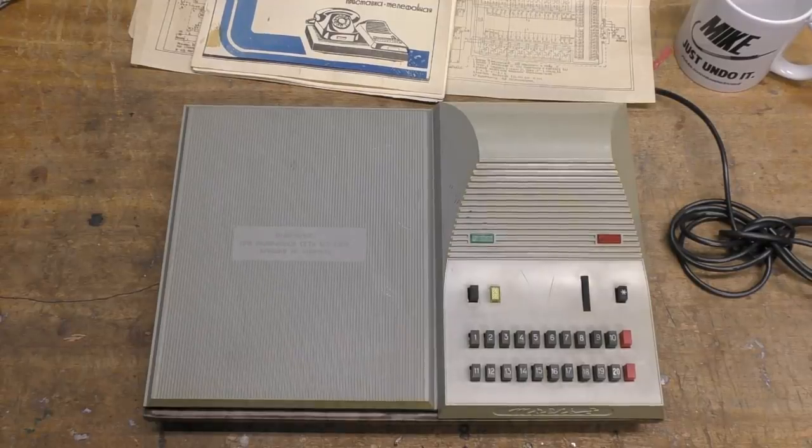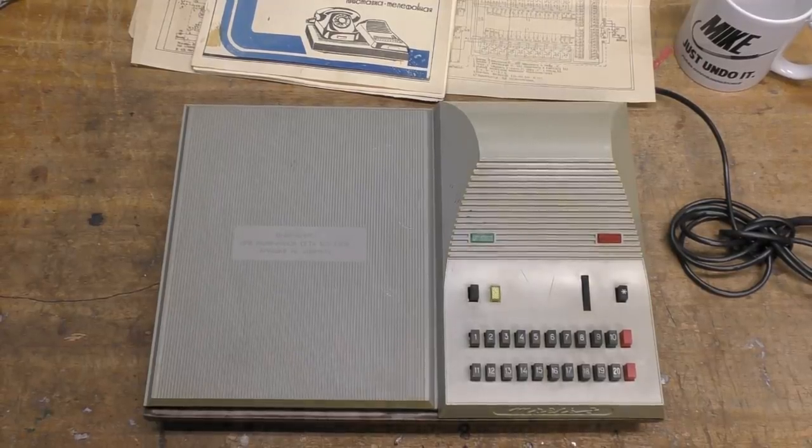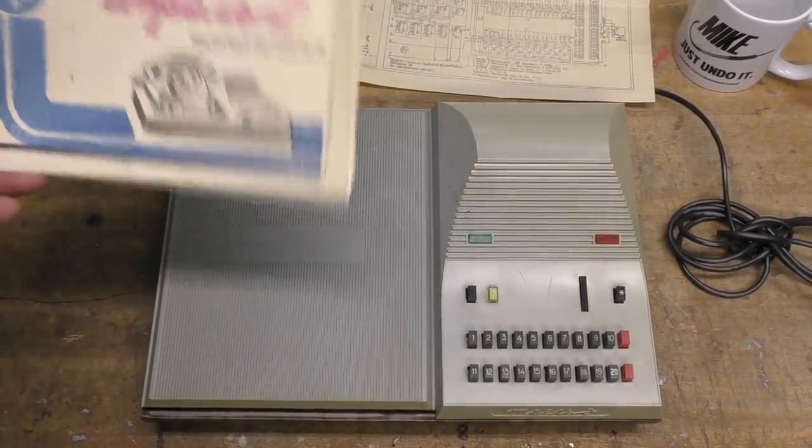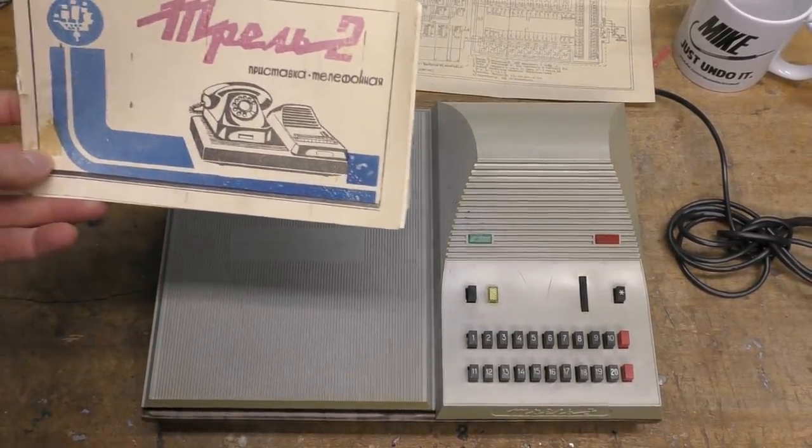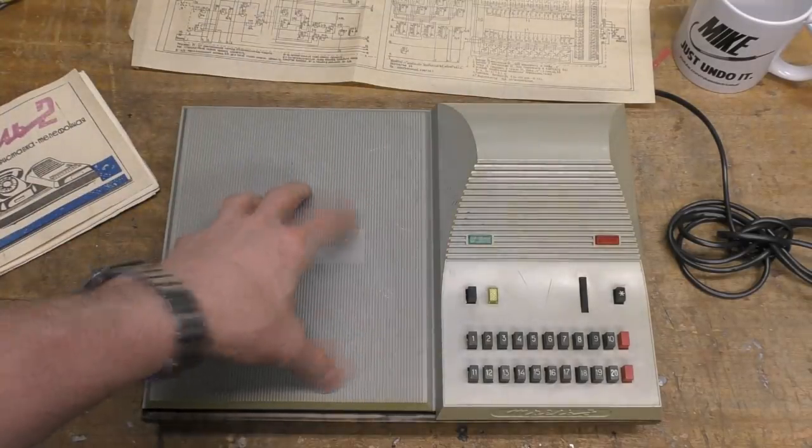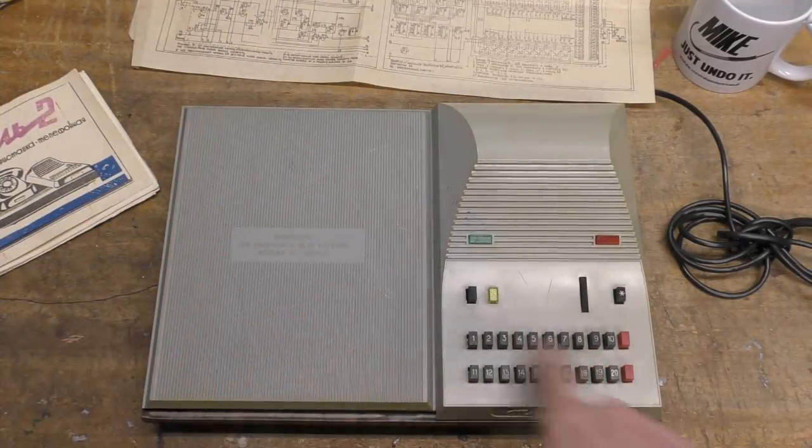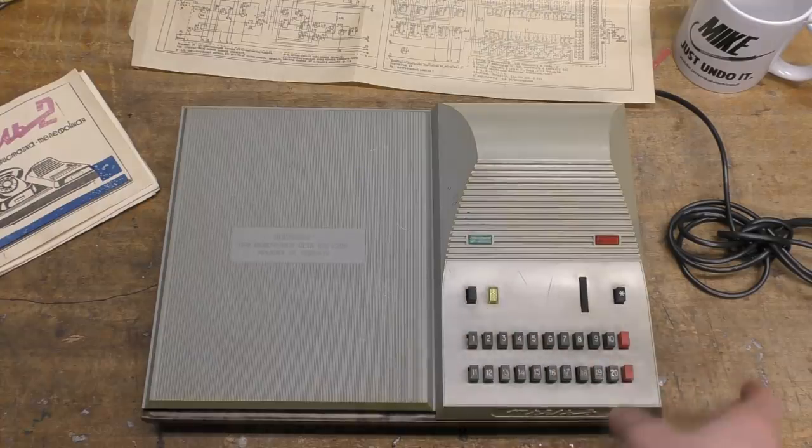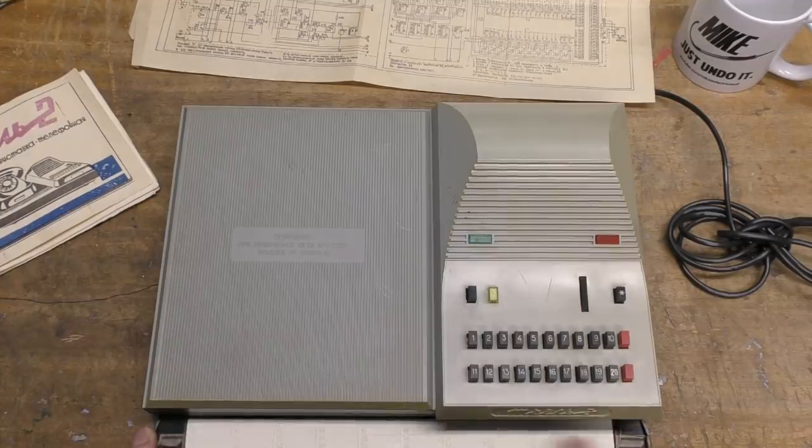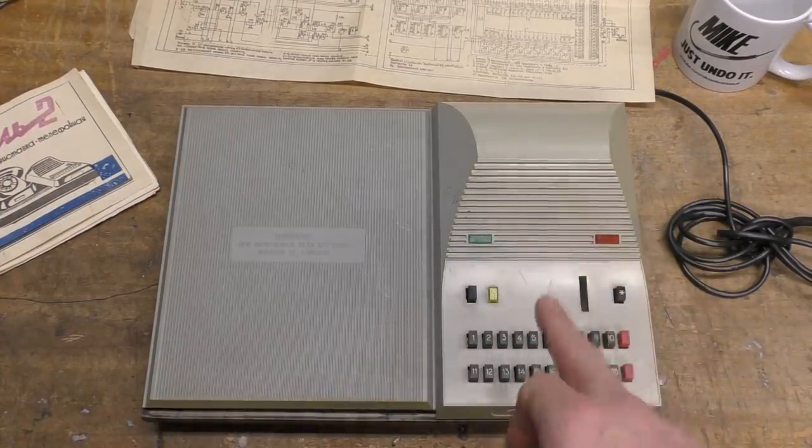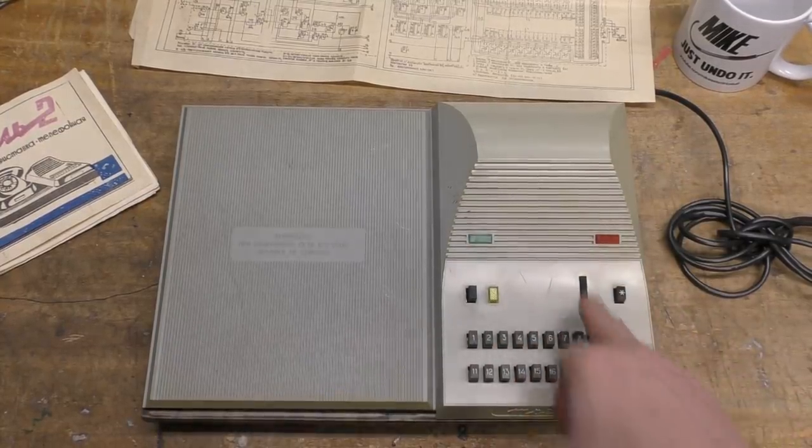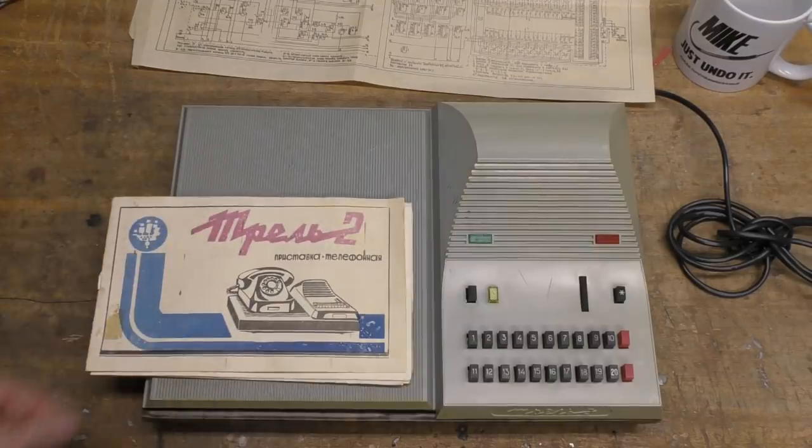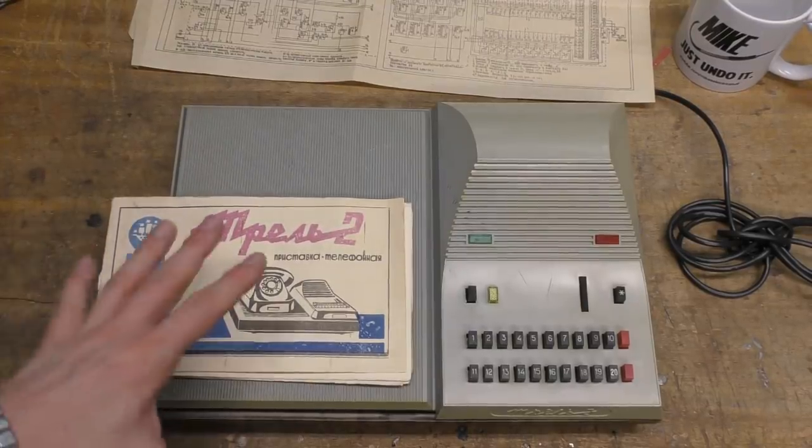Hi, so today we've got an interesting bit of 1980s former Soviet technology. This is a Trell-2 phone autodial and the idea is that you'd set your phone on here and then you could dial up to 40 stored numbers. There's 20 buttons here and then there's a shift that gives you another 20 buttons. There's a little area here where you can write the numbers down. There is a speaker here. I don't think this acts as a hands-free, but it does allow you to monitor the call while it's doing the dialing. I think you then actually have to pick up the receiver to actually do the call.